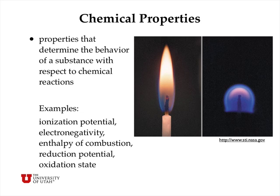A chemical property is a property that determines the behavior of a substance with respect to chemical reactions. Examples include the ionization potential, electronegativity, the enthalpy of combustion, reduction potential, and oxidation state. These are all properties that have to do with the chemical or reactive properties of substances.